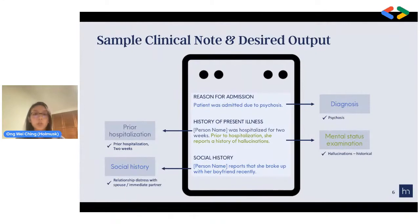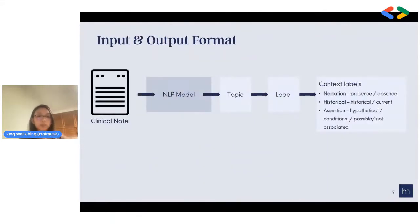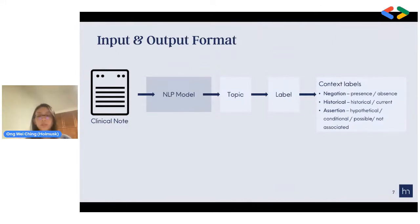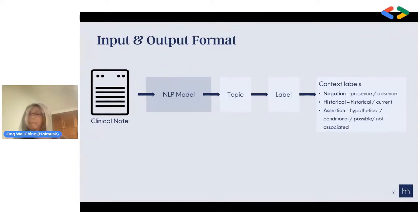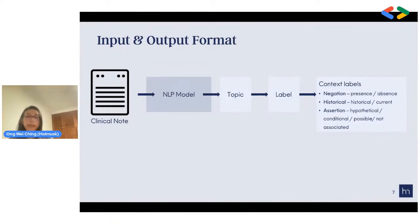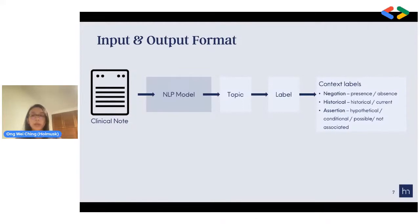To give more illustration — putting a clinical note through the NLP model, we want to identify the topic, for example diagnosis, and then identify the particular label, for example psychosis. There might also be contextual information regarding this label: whether the label is present or not (negation context), whether it's current or historical information, and assertion — whether the information is associated with the patient or perhaps their family members. We want to add contextual information to better understand the patient assessment.